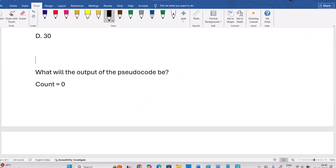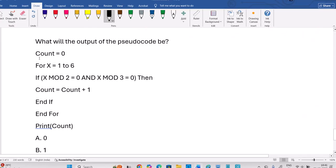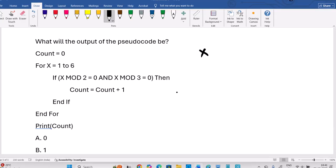Next, if you see this question, for loop, yeah, count is 0 for X equal to 1 to 6. If X mod 2 equals 0 means X should be divided by 2. And X mod 3, X is divided by 3. X is divided by 2, X is divided by 3. Then only you can enter into this loop. Count will be increased by 1.